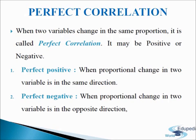Let's take an example: values of x are 10, 20, 30, 40, and 50, and the values of y are 10, 8, 6, 4, and 2. As you can see, the values are decreasing on the y-axis. So this is a perfect negative correlation.